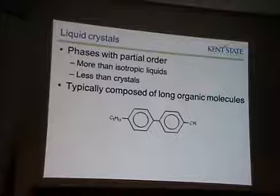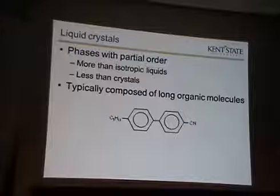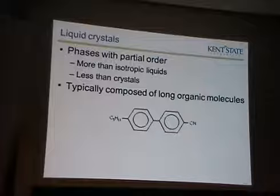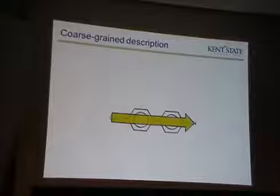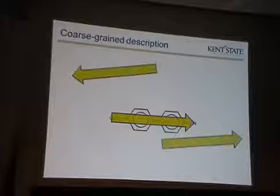Now, if we want to do liquid crystal physics rather than chemistry, we typically want to go to a more coarse-grained description — that is, we want to average over all these atomic degrees of freedom. We're not going to think about where all the atoms are within this molecule. So we will represent this by an arrow, indicating the orientation of the molecule.